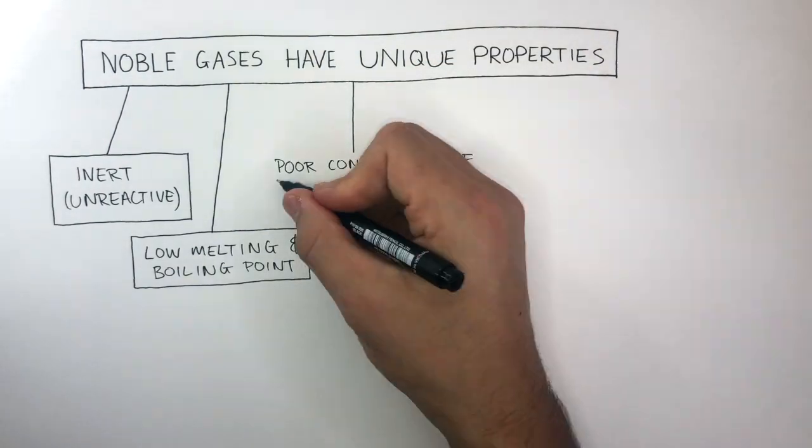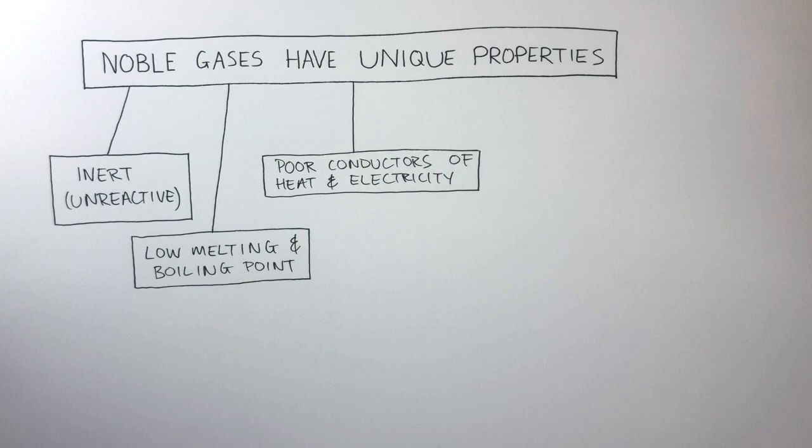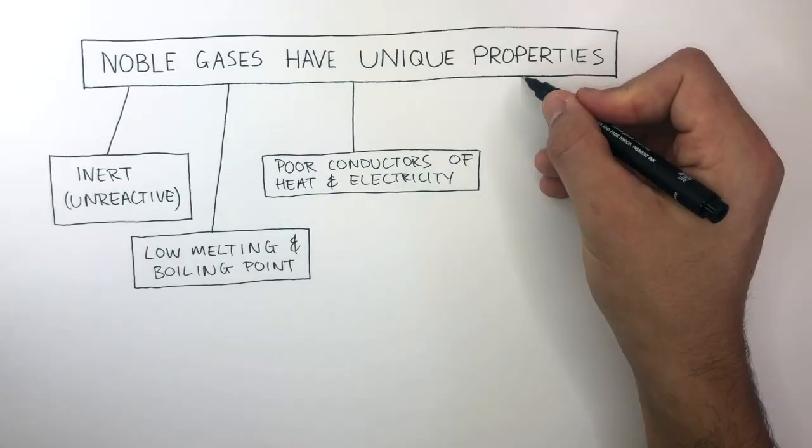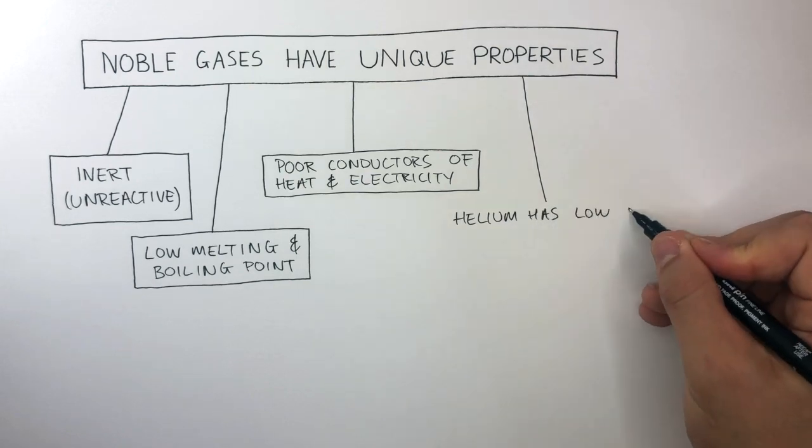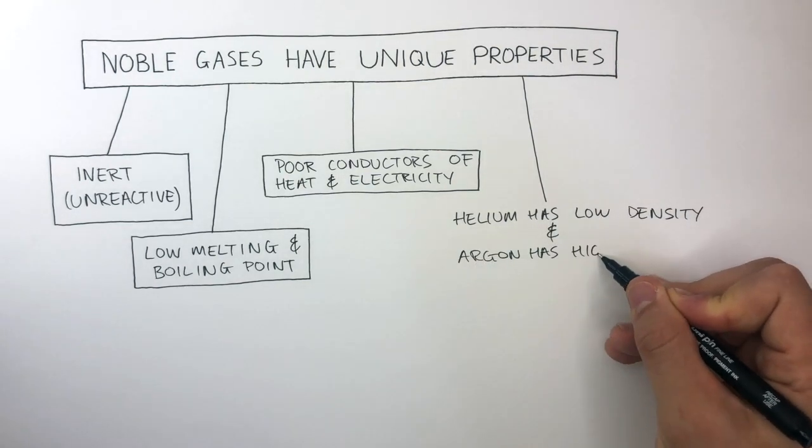They're poor conductors of heat and electricity as they're gases at room temperature. The density increases going down the group. Helium has a low density and argon has a higher density.